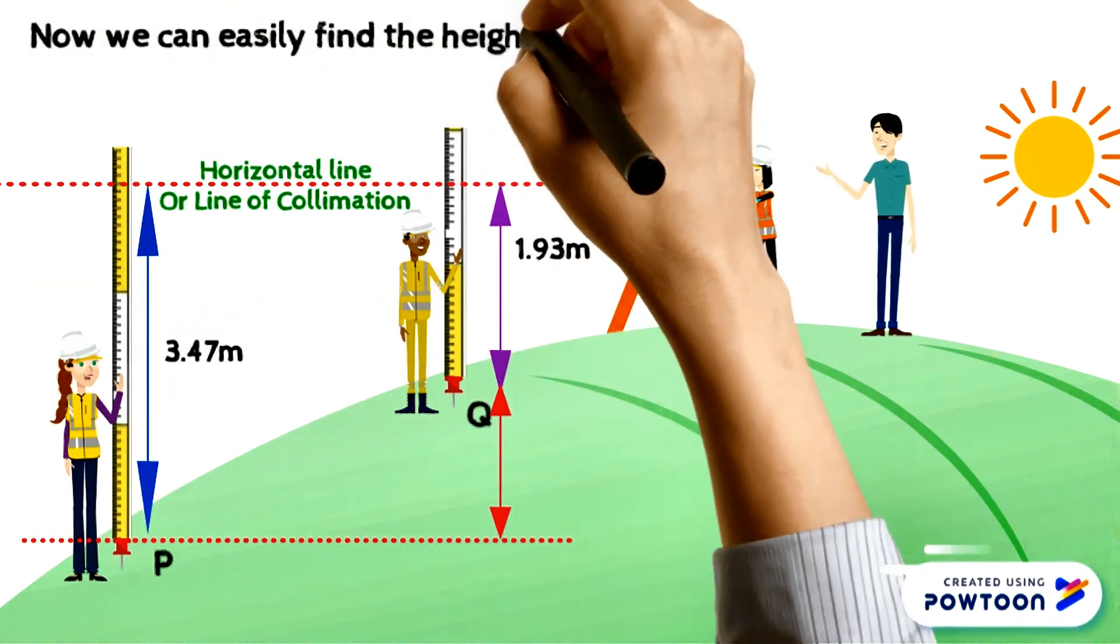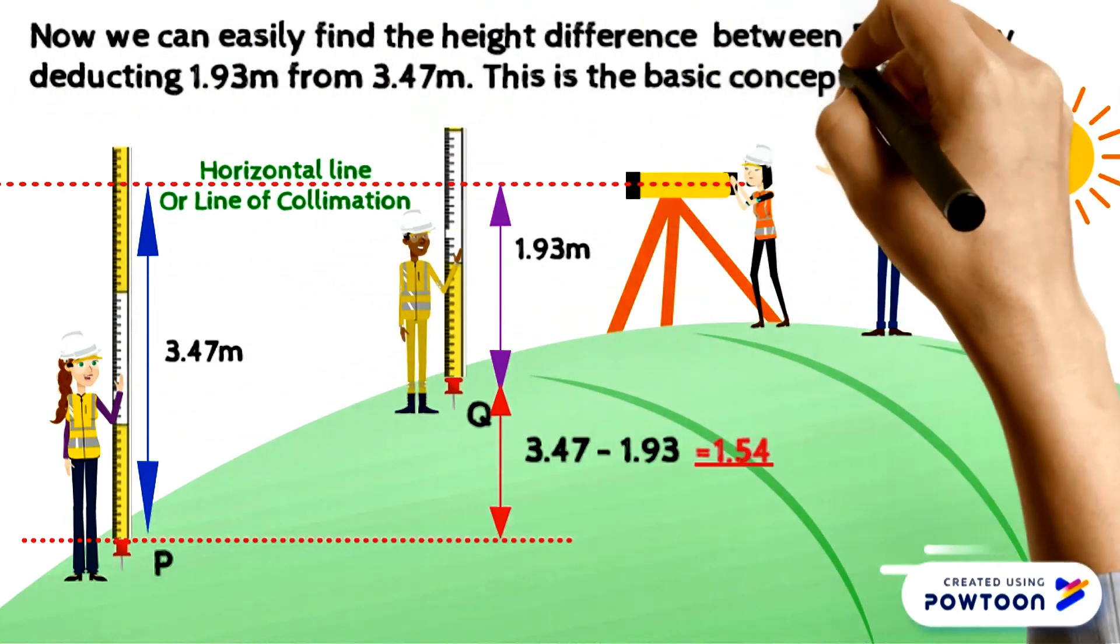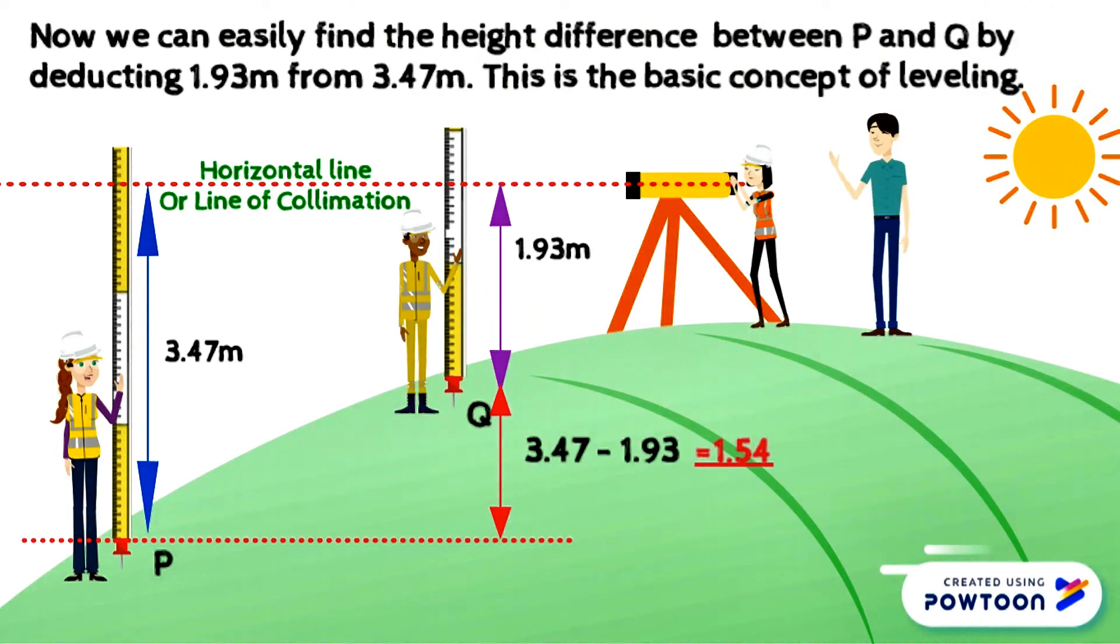Now we can easily find the height difference between P and Q by deducting 1.93 meters from 3.47 meters. This is the basic concept of leveling.